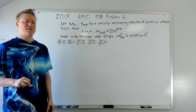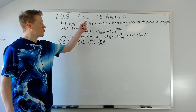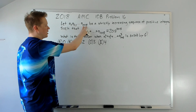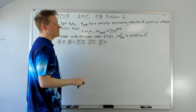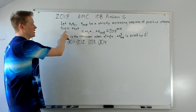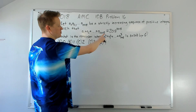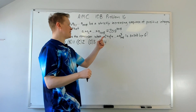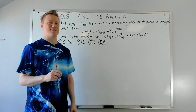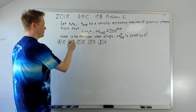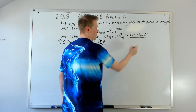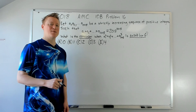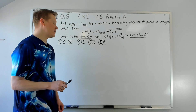We are doing the 2018 AMC 10B Problem Number 16. Let's read the question first: let a₁, a₂, all the way to a₂₀₁₈ be a strictly increasing sequence of positive integers such that a₁ + a₂ + ... + a₂₀₁₈ equals a certain expression. What is the remainder when we cube each term, add them up, and divide by 6? The clue here — 'remainder when divided by 6' — is a good sign that you can apply modular arithmetic to attack this problem.